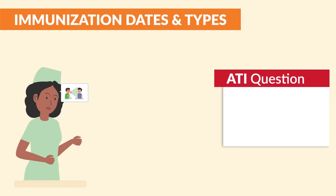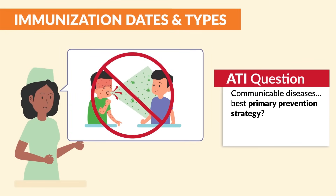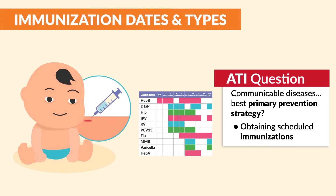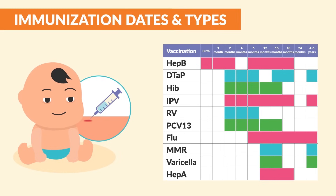ATI mentions that for communicable diseases, the best primary prevention strategy is obtaining scheduled immunizations. Before we get into all the memory tricks for the vaccination dates and age ranges, let's cover some top tested key points, so be sure to write this down.